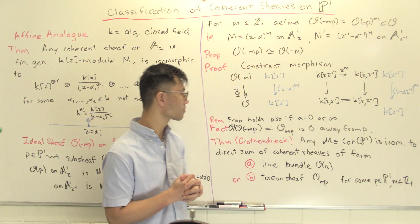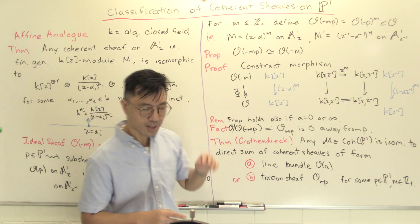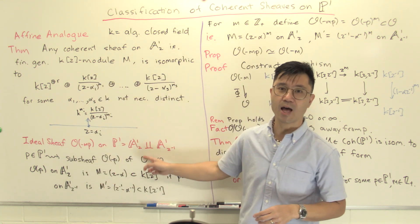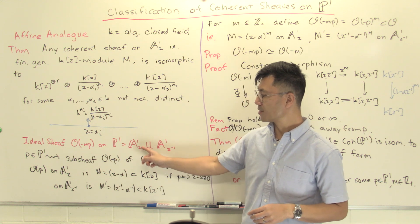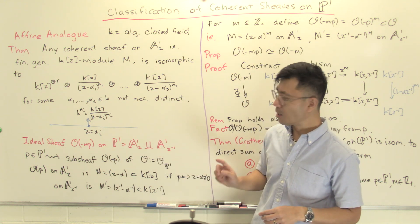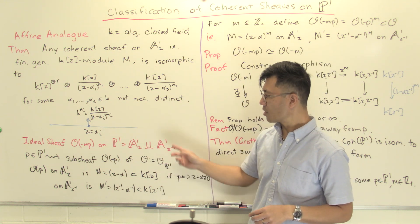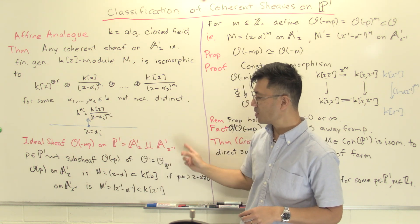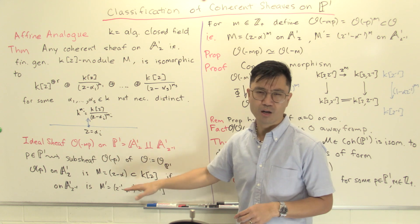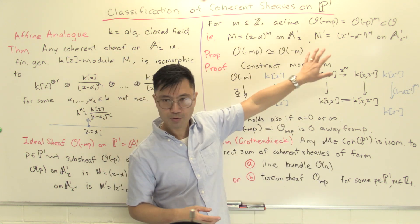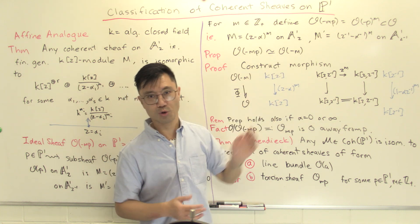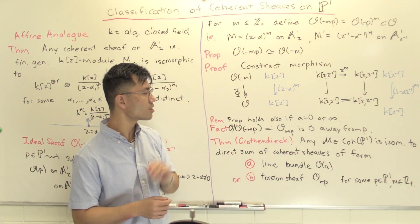This constructs our morphism of sheaves from O(-m) to O, which is injective and whose image is O(-mp), thus proving this isomorphism. That's rather nice. I did this argument when p corresponds to a point on A1_Z where Z is not zero, but you can also do this for p, the point where Z is infinity, or the point p equals zero. The way you write it out is a little bit different, but you can still do it in that case, and this all still holds true.